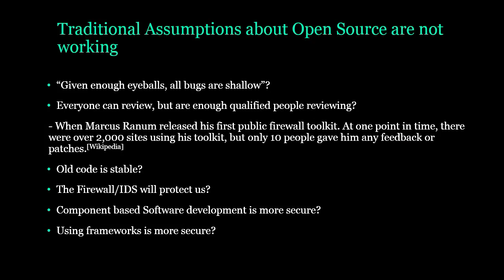Traditional assumptions really just aren't working. 'Given enough eyeballs, all bugs are shallow' — that's what open source has been based on, and it's certainly valid. But the question is: who's reviewing it, and are they qualified enough? If it's just a core team, it's easy to ignore your own mistakes. A good example was a firewall toolkit where 2,000 sites used it but only 10 people gave any feedback. With the assumption that old code is stable, we're seeing bugs introduced years ago just now showing up. Component-based software development eliminates some common problems, but when something creeps up it spreads like wildfire.